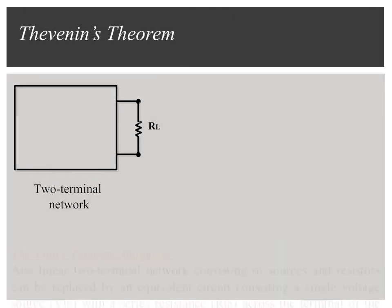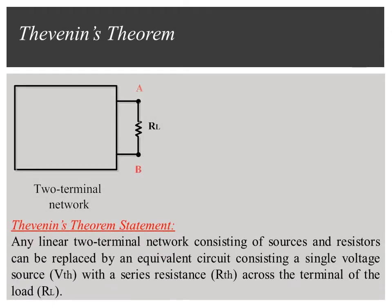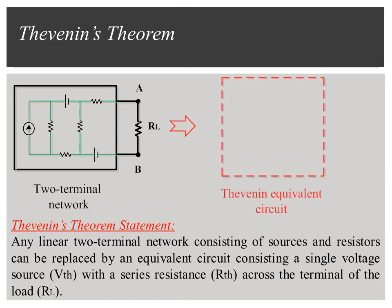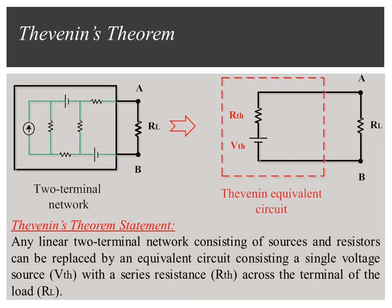Thevenin's Theorem states that any linear two-terminal network consisting of sources and resistors can be replaced by an equivalent circuit consisting of a single voltage source with a series resistance across the terminal of the load. So it is possible to simplify any complex circuit to an equivalent circuit with just a single voltage source and series resistance connected to the load.